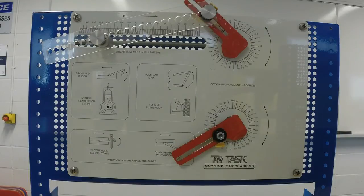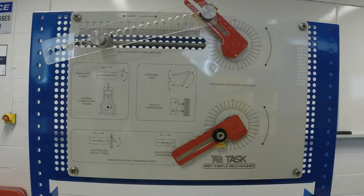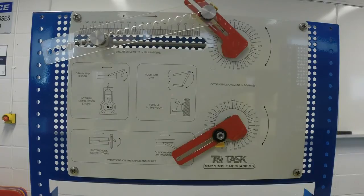We're going to talk about lab one first. Lab one is about fundamental of mechanisms. The objective of this lab is to study and analyze the displacement and velocity of different links in the following mechanism.